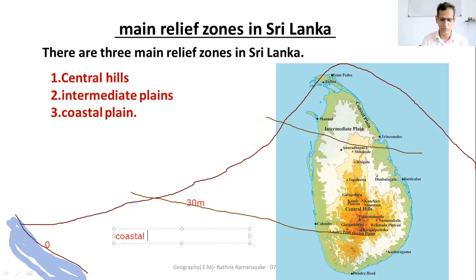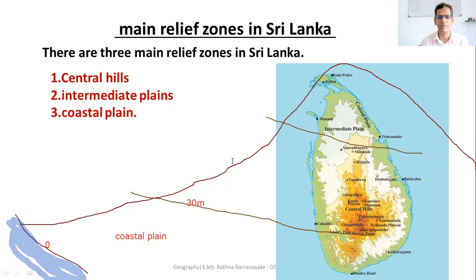Coastal Plain — you know: Matara Town, Colombo Town, Trincomalee, Jaffna — these are in the Coastal Plain. Colombo, Matara, Batticaloa, Trincomalee, Jaffna, Point Pedro — all belong to the Coastal Plain.